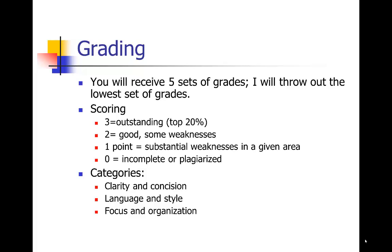You will be graded on three categories, each scored zero to three. The first category is clarity and concision of the writing — everything from unit one: getting rid of clutter, writing in a clear and clean style, being concise, not using too much jargon and acronyms. Remember, you're writing for a wide audience of scientists and peers. Major grammar problems that make writing unclear will be picked up here, but we won't be picky about small grammatical errors that don't affect clarity.